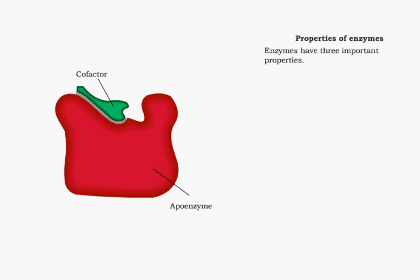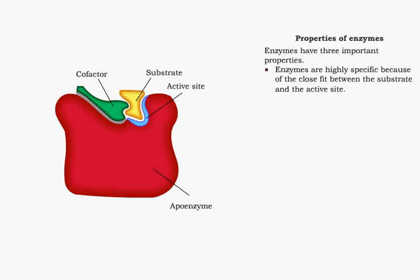Enzymes have three important properties. First, they are quite specific, which means they will only catalyze one or two reactions. The specificity of enzymes comes from the close correspondence in shape between the substrate and the active site.